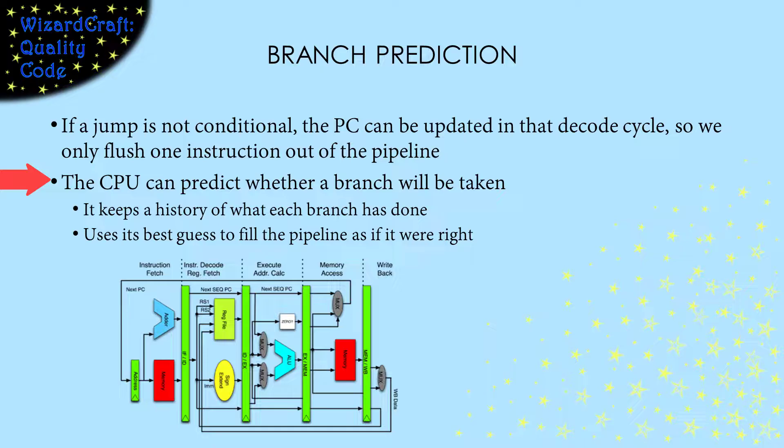Some processors take that idea even further. For conditional jumps, they will try to predict whether the jump is going to happen or not in that instruction decode phase. They keep a history of whether that instruction's jump has been taken and use that history to make a best guess. If the prediction is right, then we only flush at most one cycle. If it's wrong, we'll have to flush the whole thing, but we might have had to do that anyway.